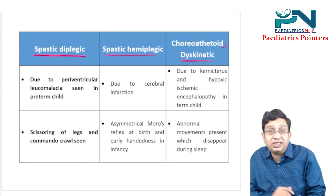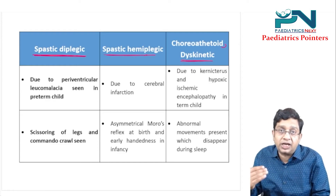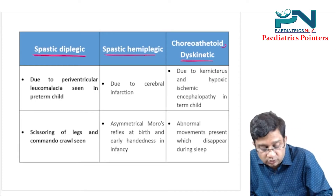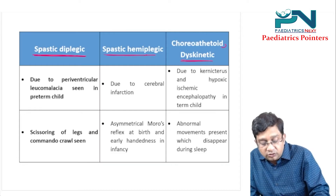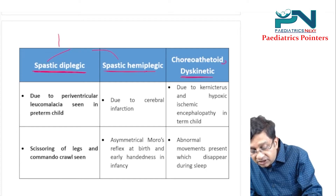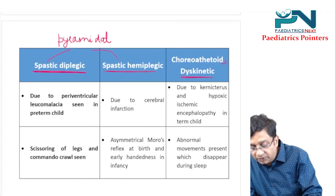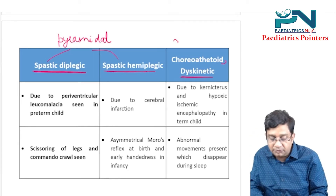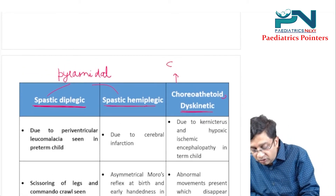The choreoathetoid type is also called the dyskinetic type — there is abnormal movement which can be chorea and athetosis. The spastic types (diplegic and hemiplegic) are also called the pyramidal type, while the choreoathetoid type is called the extrapyramidal type.